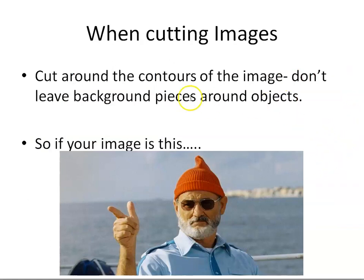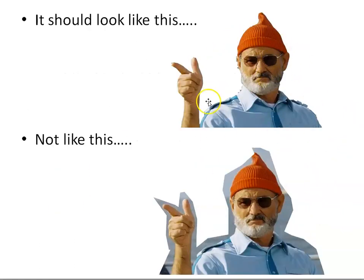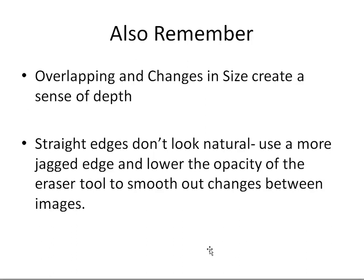When you are cutting out your images, you want to cut with the contours and not keep all the background stuff. For example, you want to cut Bill Murray out so it's just Bill Murray — you don't want all the extra pixels around him, because your collage won't look like it's actually together. You also want to pay attention to overlapping and changes in sizes to create a sense of depth: things farther away are smaller, things closer look larger.